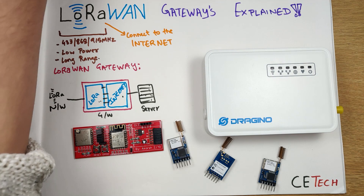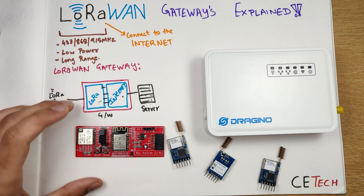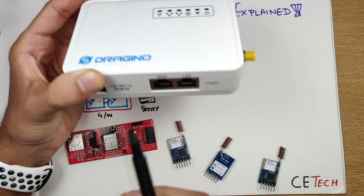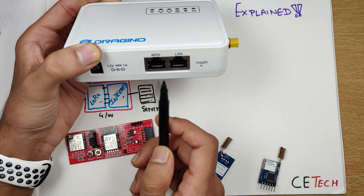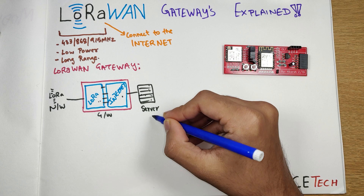If you open the professional Dragino gateways, the internals are similar — the LoRa chips and Wi-Fi chips used inside are better than the ESP8266 and the RA02, because obviously this is a DIY gateway and these are professional gateways. On the professional gateways, you can connect not only through Wi-Fi but also via an Ethernet wire coming from your router which has internet access. That is the basic working of a LoRaWAN gateway.